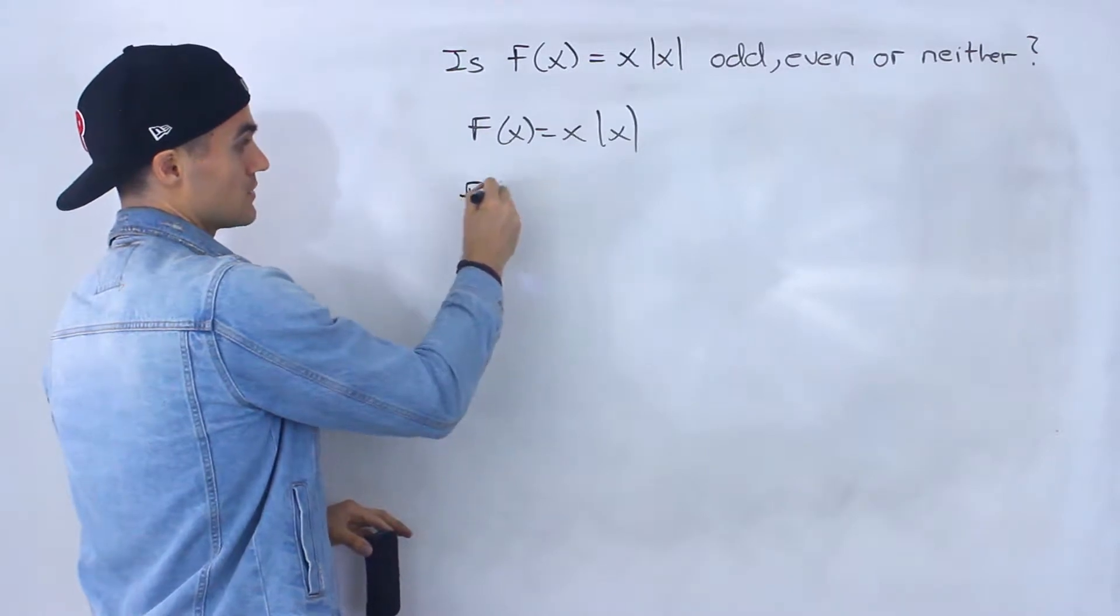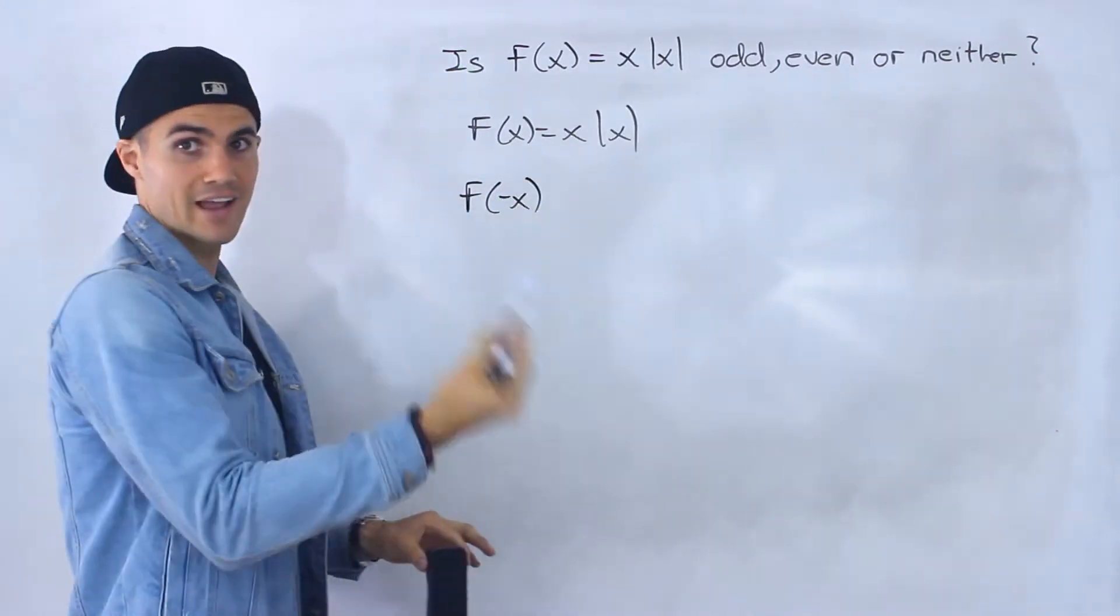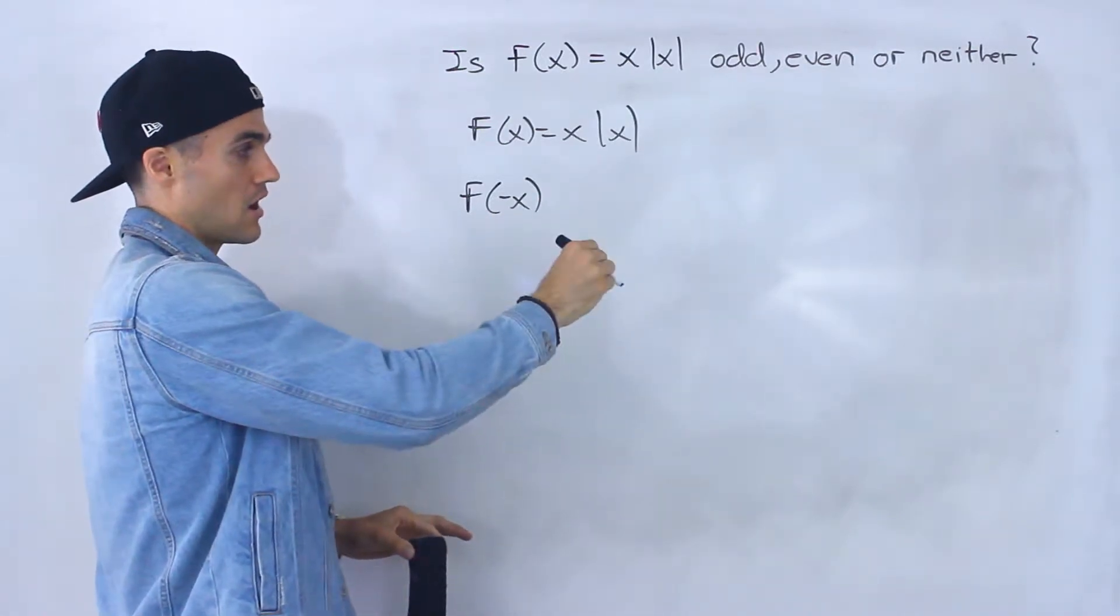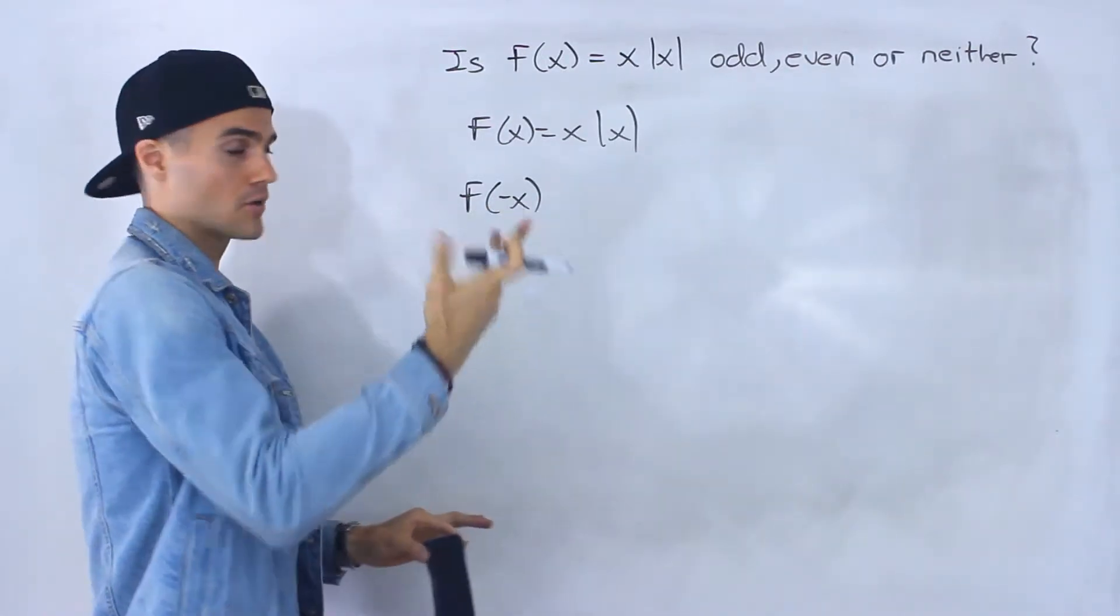So first thing we always got to do is check what's f of negative x gonna be. If it's equal to f of x it's even, if it's equal to negative f of x it's odd, and then if it's neither of those it's neither.